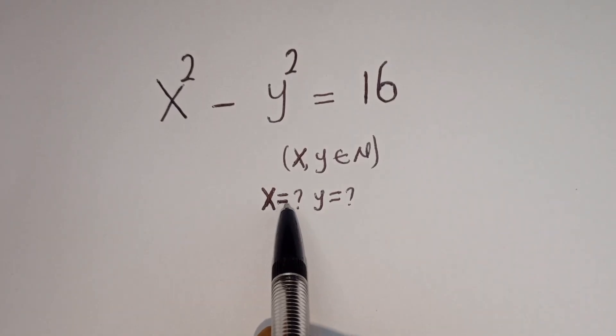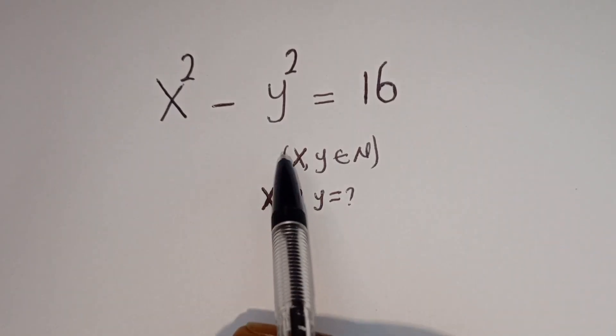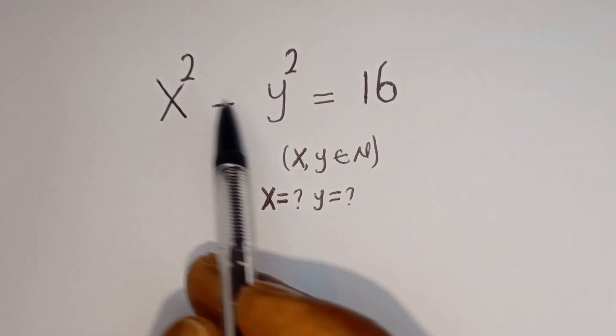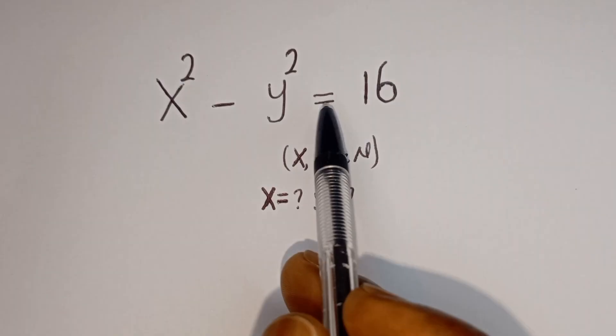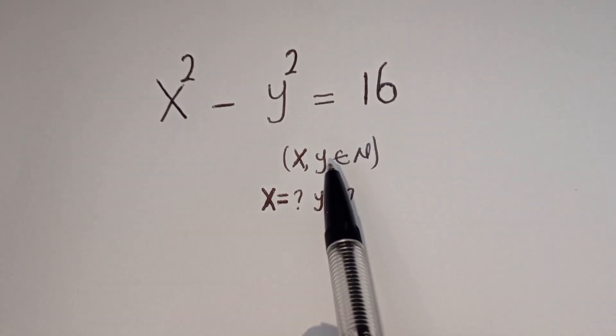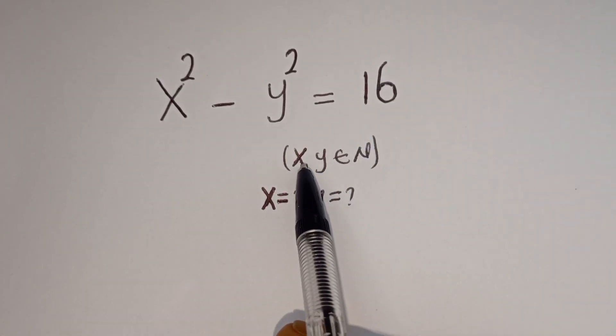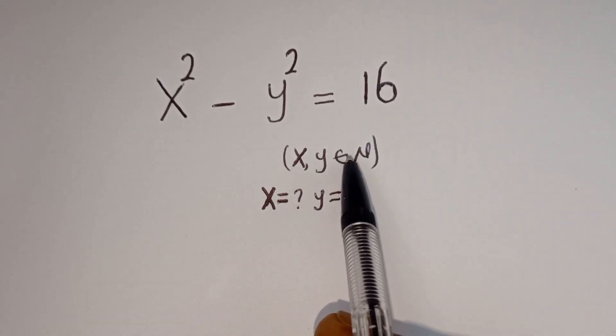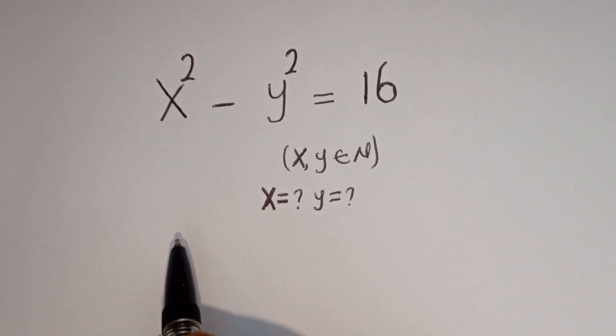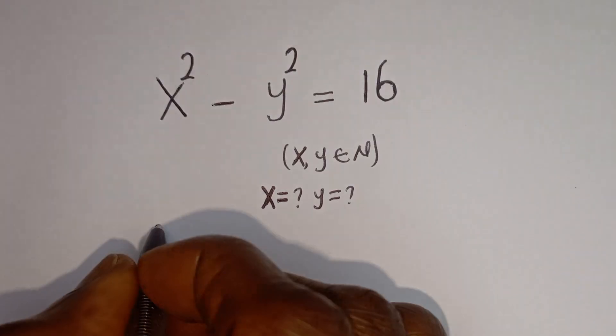Hello, how to solve for x and y in this equation: x squared minus y squared is equal to 16, where x and y are members of the natural number solution.